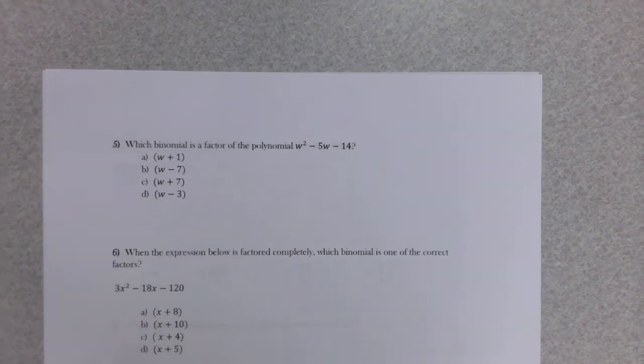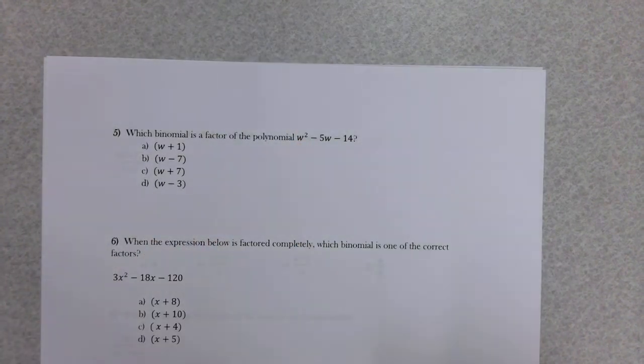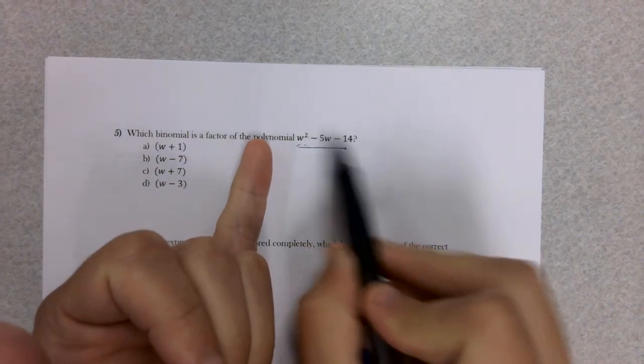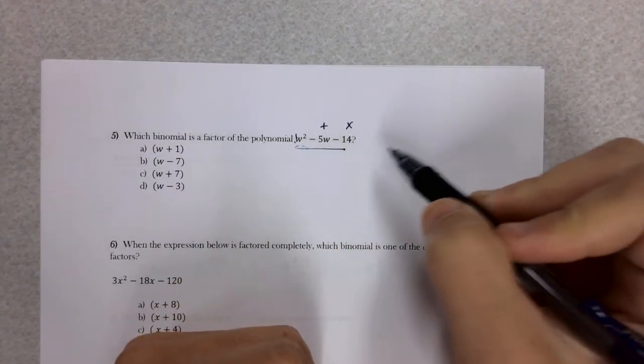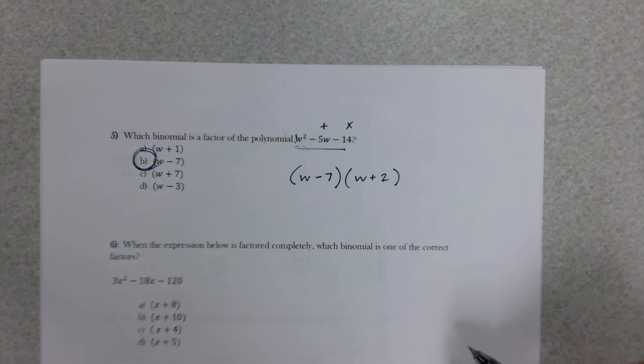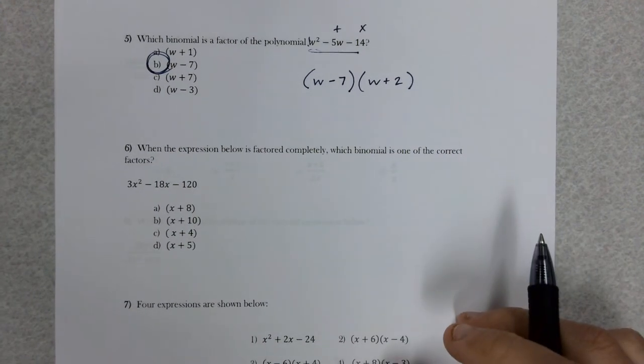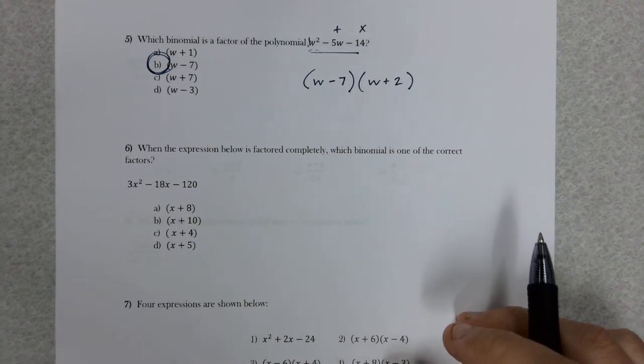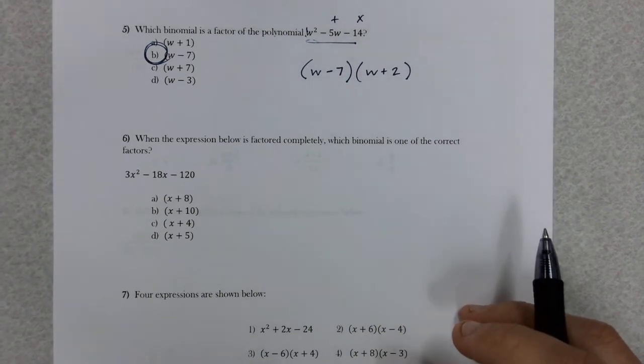Number five, these w's instead of x's don't get confused. What binomial is a factor of this polynomial? It's a trinomial. The GCF would still be a 1, so we ask ourselves what multiplies to give you negative 14 and adds to give you negative 5. You stumble upon negative 7 and positive 2, which would allow you to pick letter B. What you're noticing is we're doing this method a lot. It is probably the most common method of factoring, especially in algebra 1.